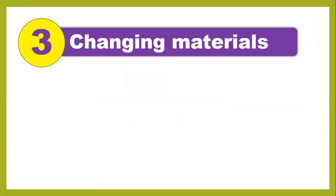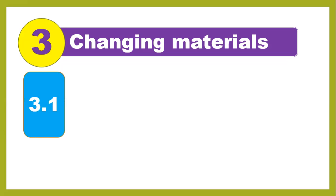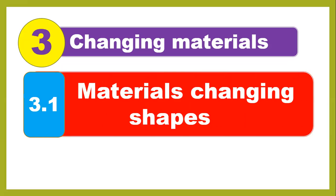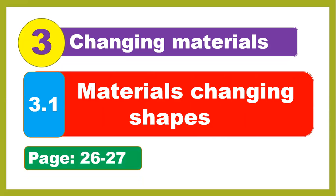Today we started the new unit, unit number 3: Changing Materials. This unit is about different materials and how we change them in different shapes. Some materials are soft and some materials are hard. You can change them by bending, twisting, and squashing. The first lesson from unit 3 is 'Materials Changing Shapes' on pages 26 and 27.